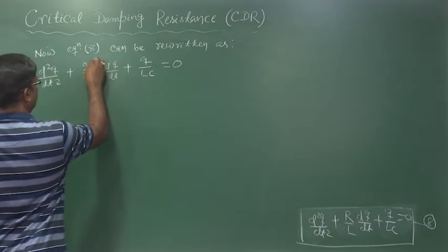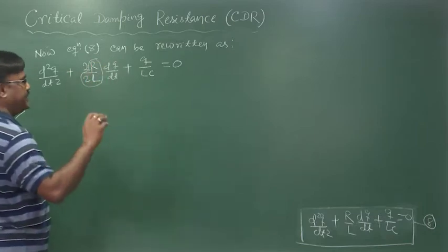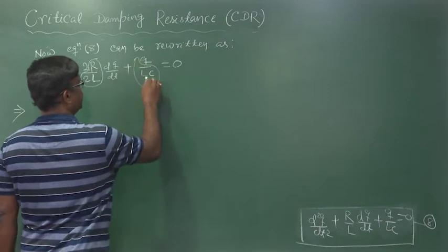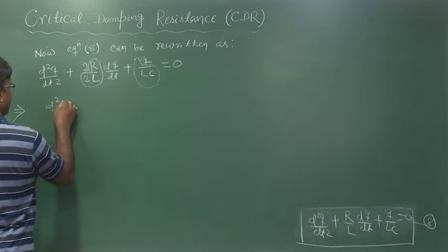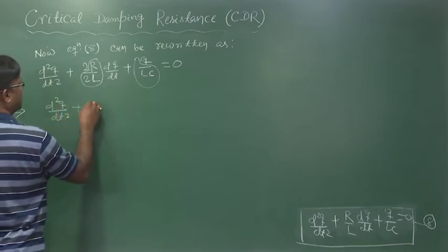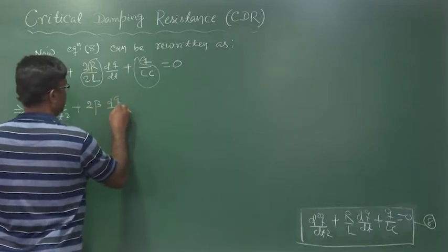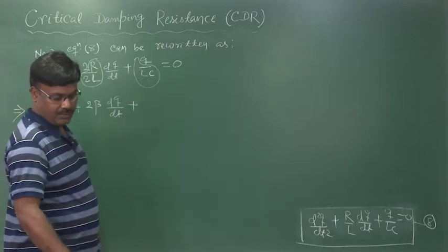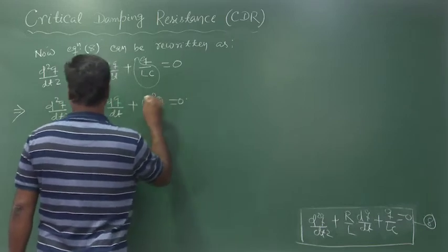Let us put R/2L as beta and 1/√(LC) as omega₀. This equation then becomes d²Q/dt² + 2β(dQ/dt) + ω₀²Q = 0.